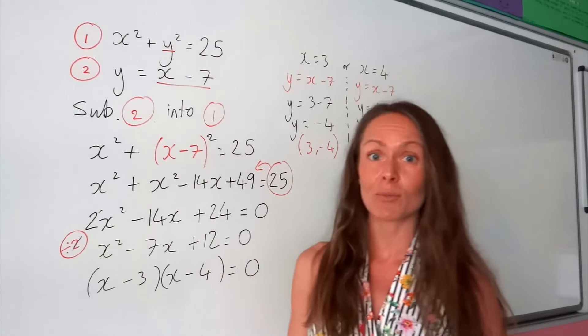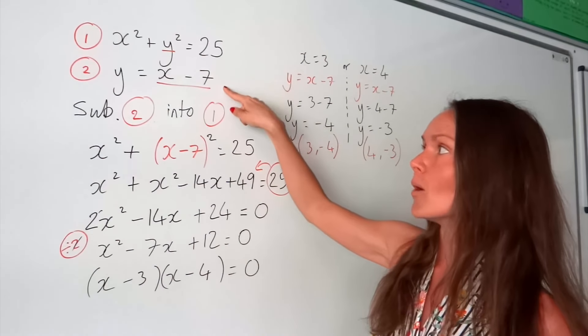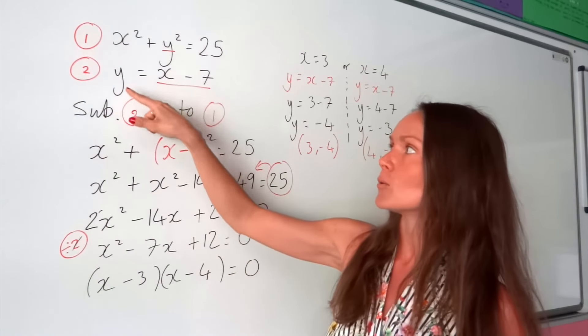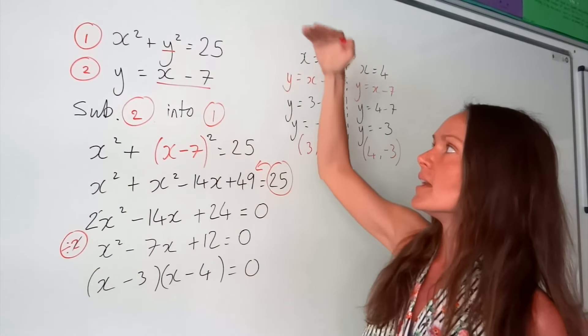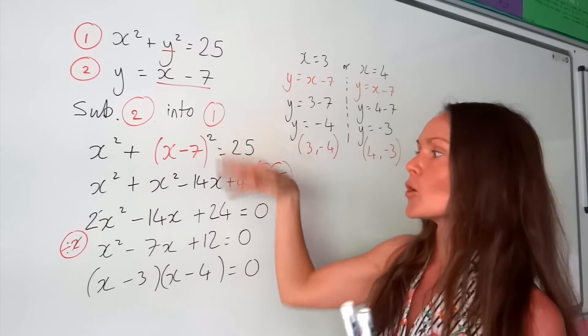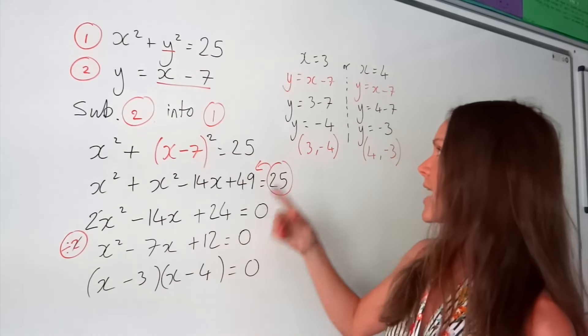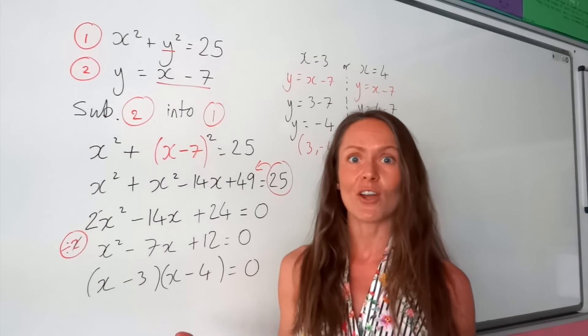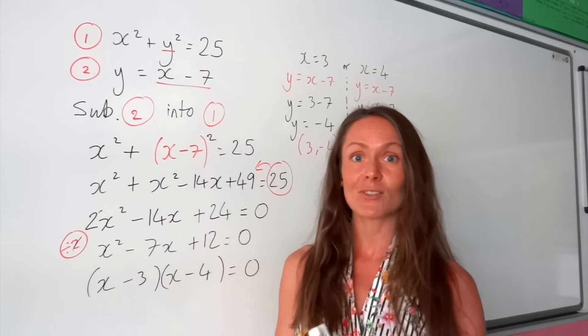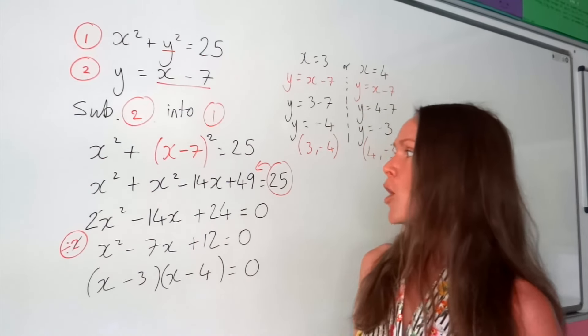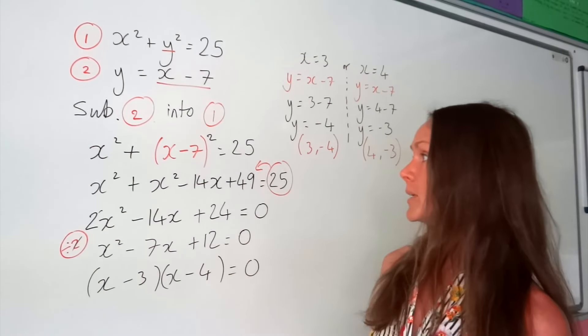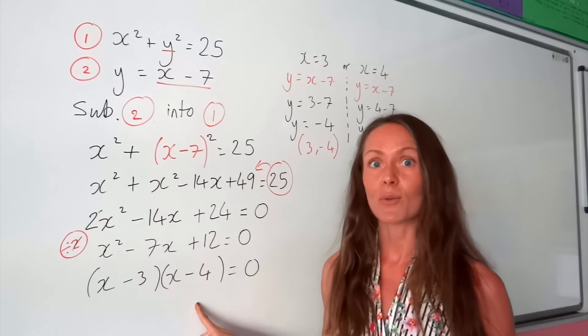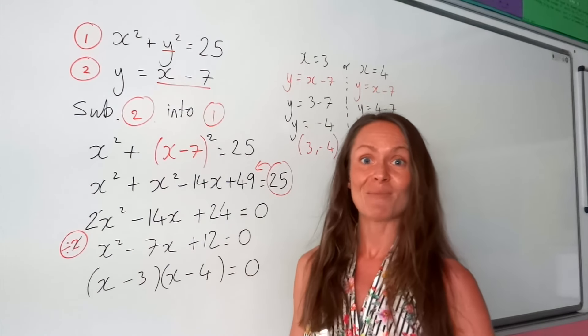So there's solving simultaneous equations when you've got one quadratic and one linear. Remember to always organize this one into y equals or x equals, and then substitute that linear equation into the quadratic so you can solve and find your first letter. Before then, at the end, substituting those values back into the linear equation to find the other unknown. So I hope you understand now solving simultaneous equations. Remember, to get a bit better at these questions, it would be beneficial to practice multiplying out brackets and also solving quadratic equations. So that's all for now, and bye-bye from me.